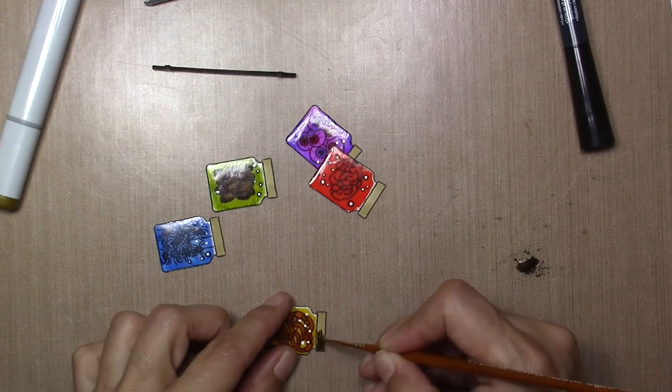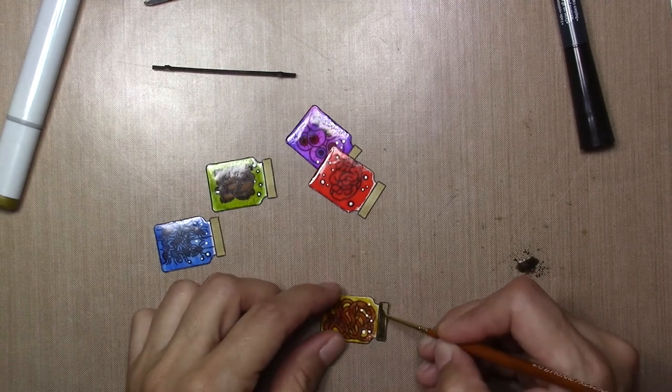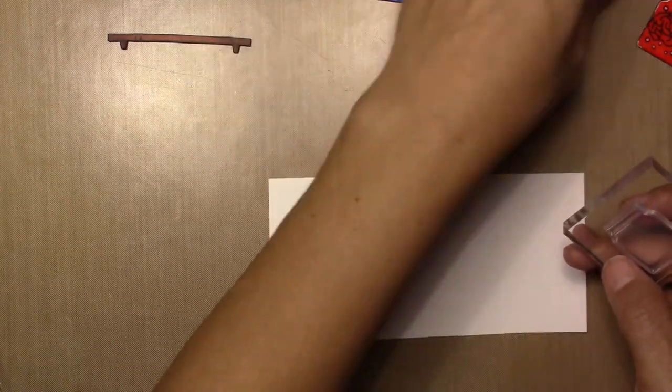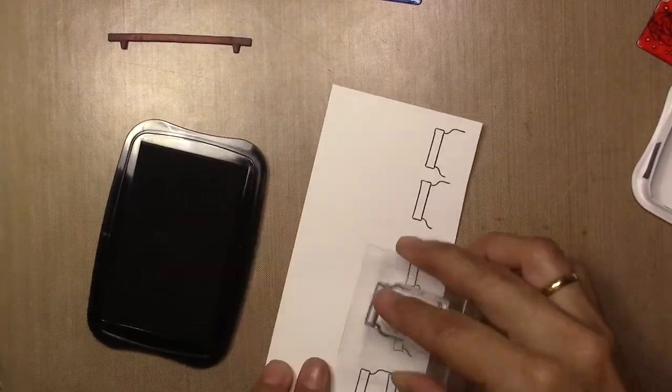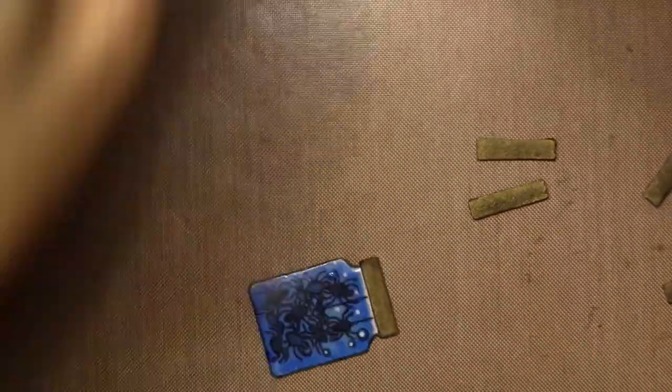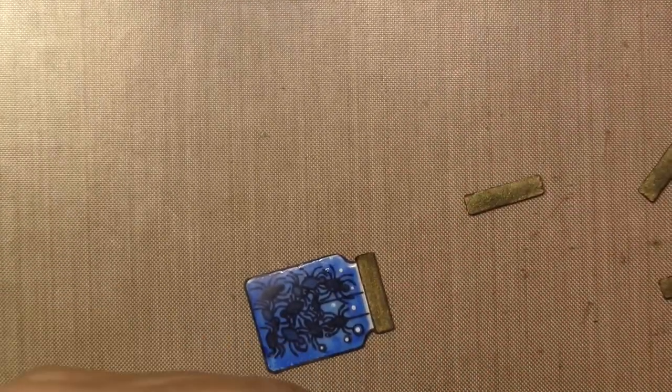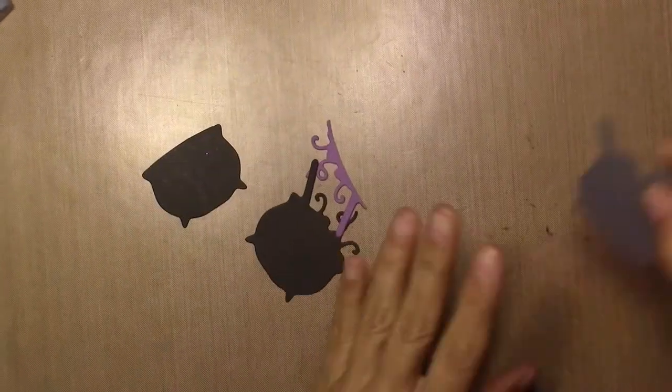And I did that at first, but then I said that I want the lids to be dimensional too. And I stamped for each jar three lids, three times. And then cut them and stack them together to make it a little bit dimensional.